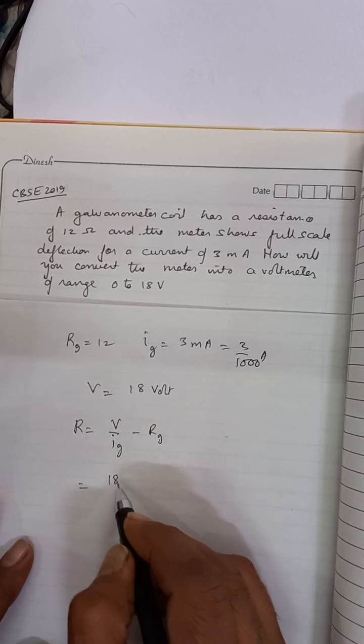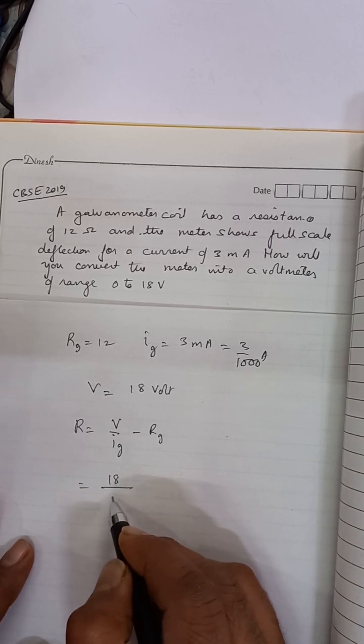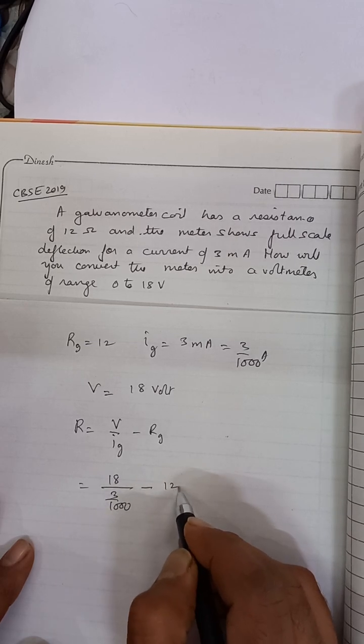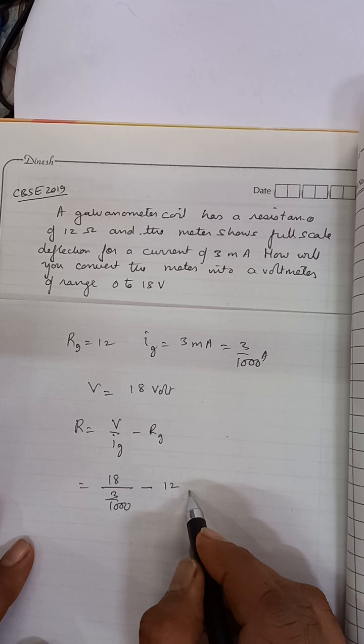V is 18 upon IG value 3 by 1000 minus RG value 12. The 1000 will go up to the numerator.